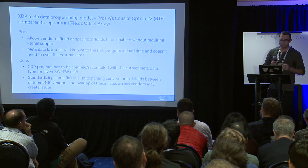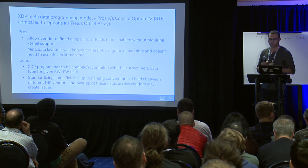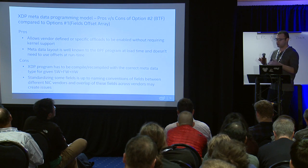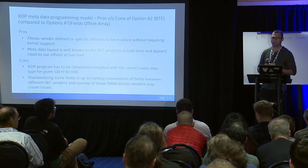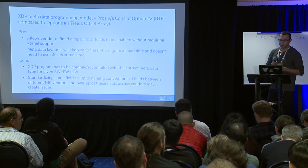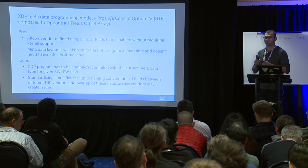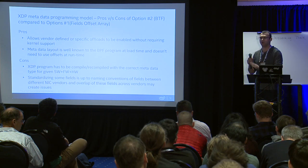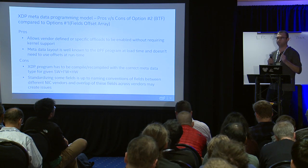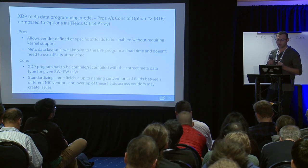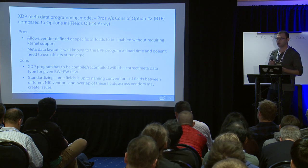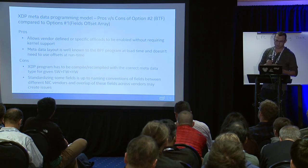The BTF approach is good for allowing vendor-specific or defined hints very easily, without needing to change the kernel — just install new firmware, query the driver, and it gives you the new format and new offload. Metadata access in the XDP program is figured out at compile time. You don't have to use offset arrays to calculate offsets at runtime. You compile the driver with a BTF descriptor and have direct access to your hardware hint.